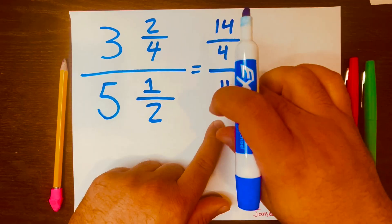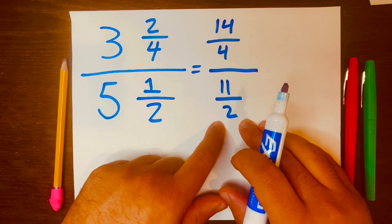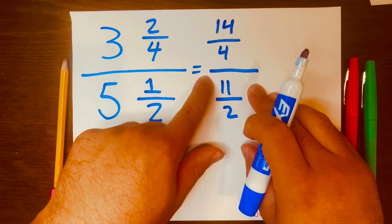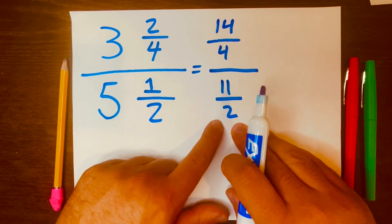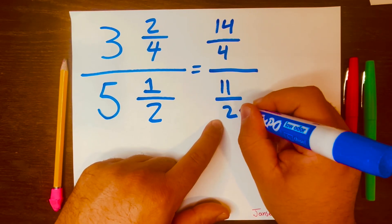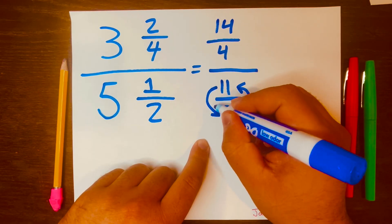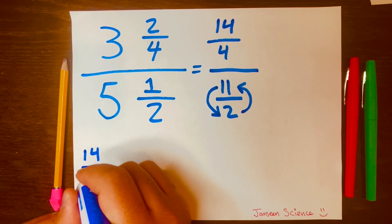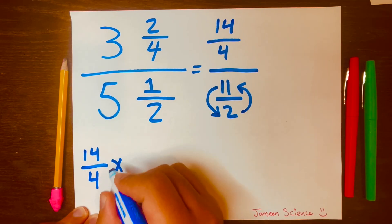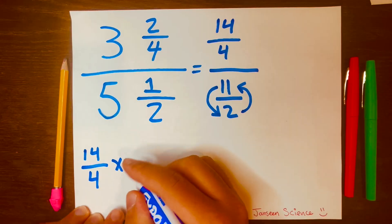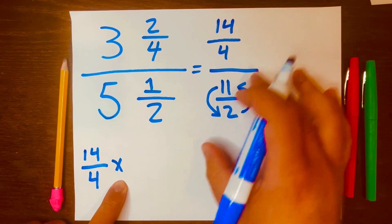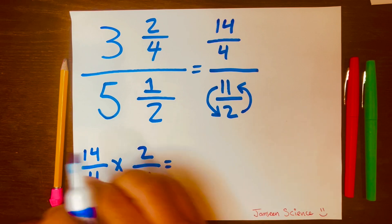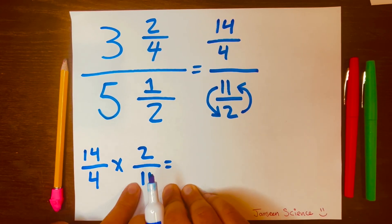Now we have fourteen over four divided by eleven over two. Next, we use the method called keep-change-flip: keep the first fraction, change the division sign to multiplication, and flip the second fraction so two goes on top and eleven goes on the bottom. So it becomes fourteen over four times two over eleven. Multiply across: fourteen times two is twenty-eight.